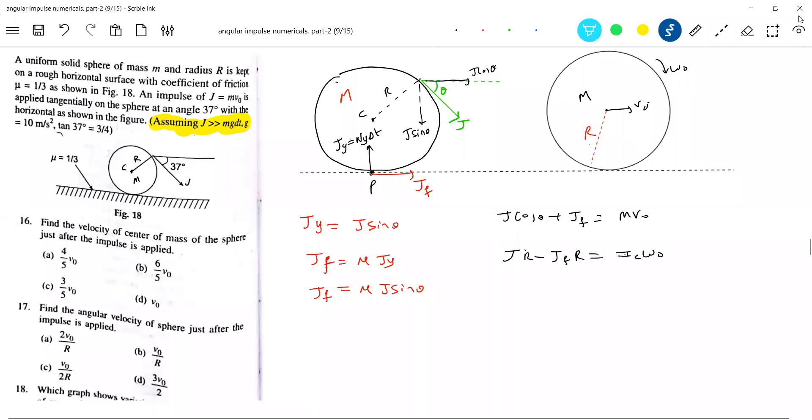This is the angular impulse. All such things will occur simultaneously. Now, do we know Jf is mu J sin theta? Theta given is 37 degrees, mu is 1 by 3, J is mv naught sin theta by 5. So what is Jf equal to?